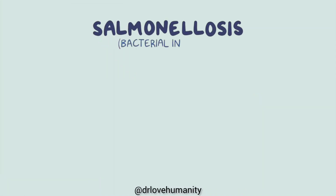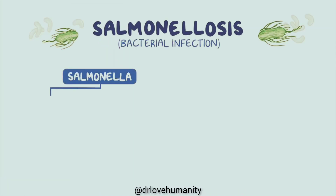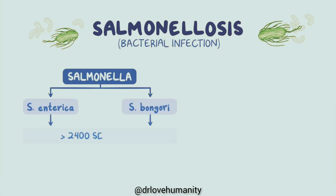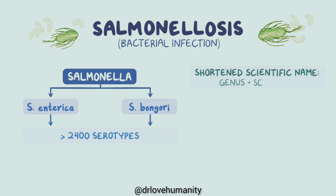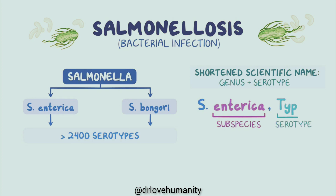Salmonellosis is a bacterial infection caused by Salmonella bacteria, which have two species, S. enterica and S. bongori, and over 2400 serotypes. Some of those serotypes are named. In such cases, people often shorten the scientific name to include only the genus and serotype. For example, S. enterica, subspecies enterica, serotype typhi, is shortened to Salmonella typhi.